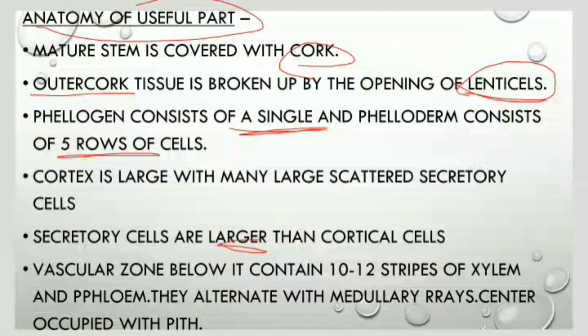Below the vascular zone there is xylem and phloem. About 10 to 12 strips of xylem and phloem are present, and these xylem and phloem strips alternate with medullary rays. The center is occupied with a pith.